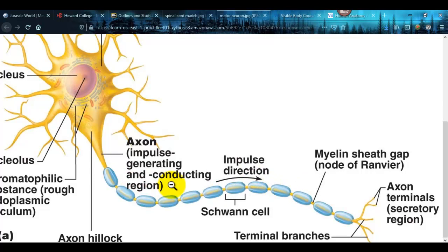And so this happens to be a myelinated axon, but it has these little gaps in here that are called the nodes, and they're called the nodes of Ranvier.